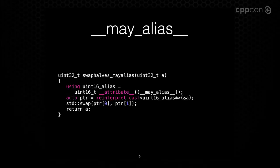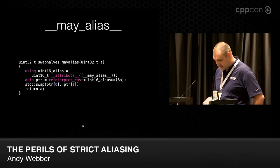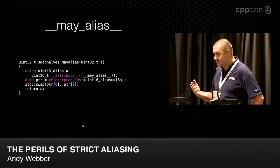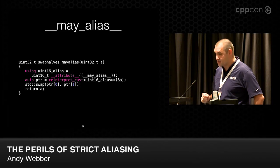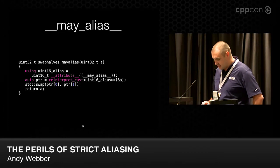GCC also has a may_alias attribute, which basically says, 'I know what I'm doing — I want this thing to be able to alias anything else.' In GCC's case, we make a typedef to a may_alias uint16_t, and if we cast through that, GCC says this will work, although getting this right is a little bit tricky, and of course it's not portable.